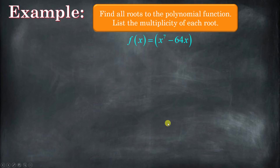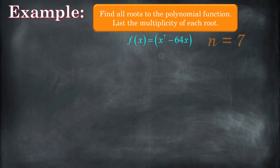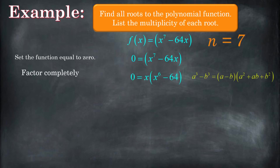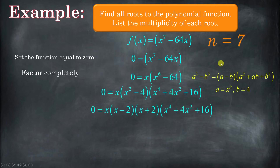Here's the example: x to the 7th minus 64x. We're supposed to find all of the roots of this polynomial function and name the multiplicity of each root. First, we identify the degree is 7, so there are going to be 7 solutions. They could be repeated, imaginary, real, or any combination. We set it equal to 0 and factor it. We can take an x out first, and then what remains is the difference of cubes.